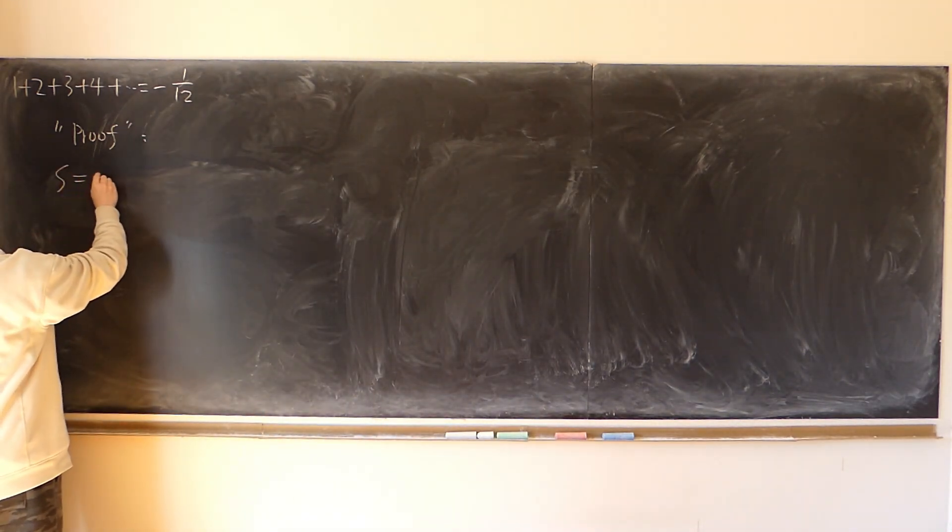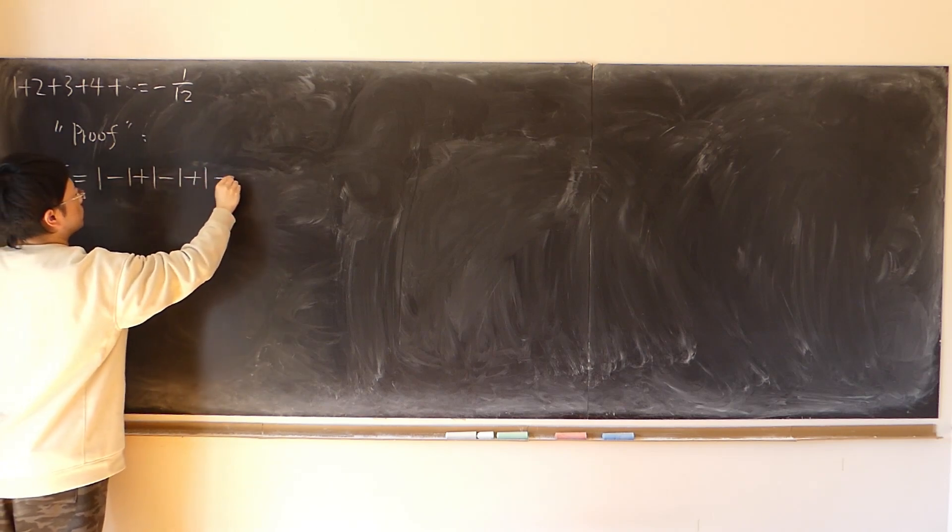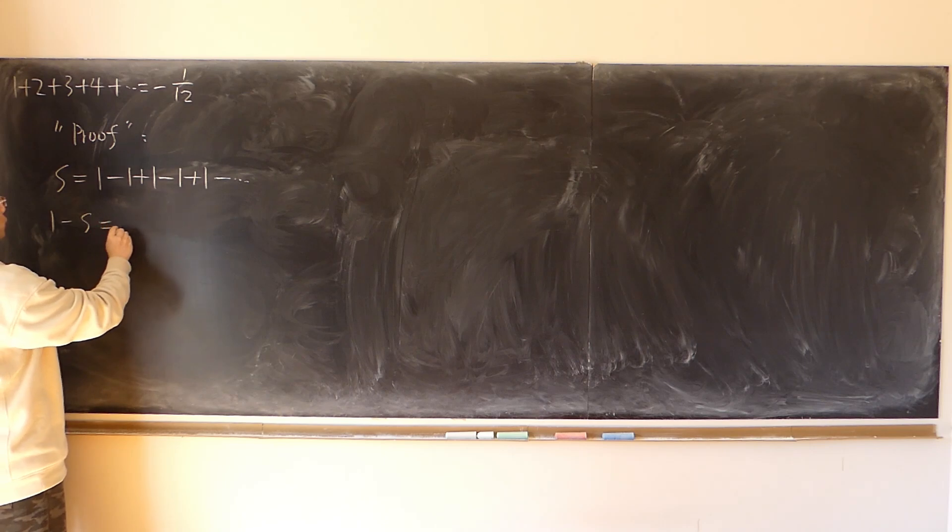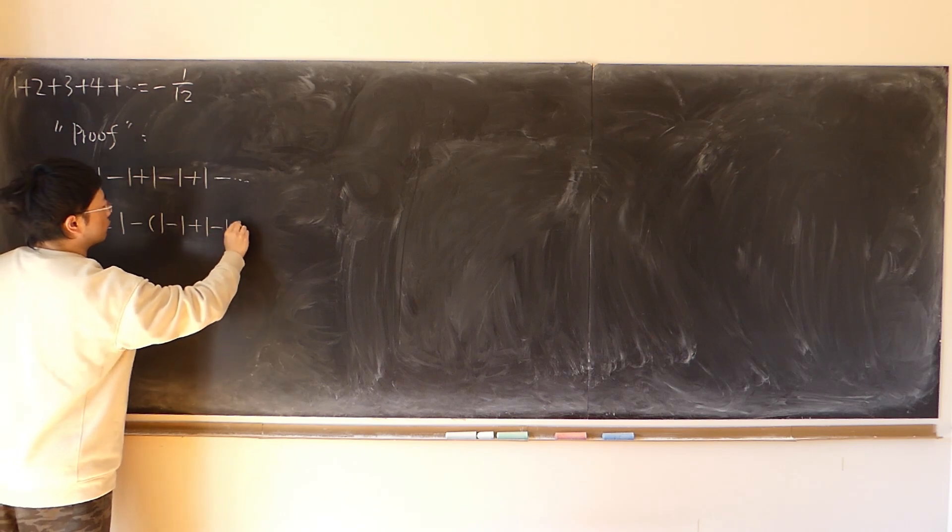So I denote s to be 1 minus 1 plus 1 minus 1 plus 1. Therefore, 1 minus s is equal to 1 minus 1 minus 1 plus 1 minus 1 plus 1.